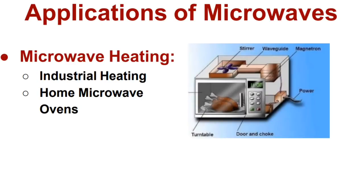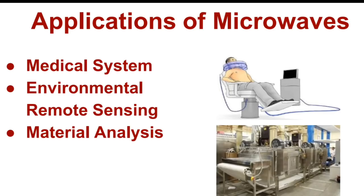Another application is microwave heating, which has two types: one for industrial purposes and another for home appliances such as microwave ovens. Microwaves can also be used in medical systems, environmental remote sensing, and material analysis to identify the age of a material. These are the applications of microwaves.